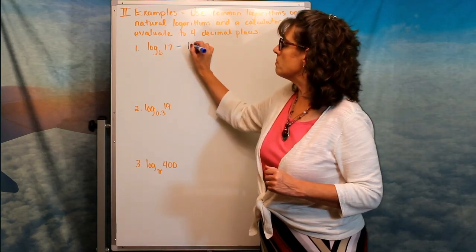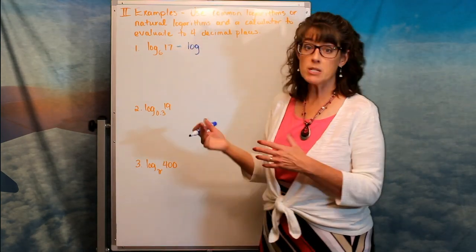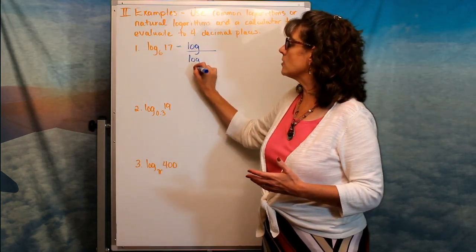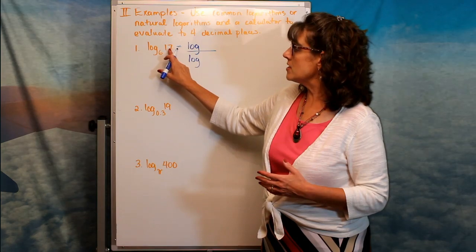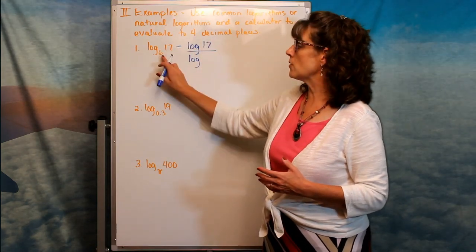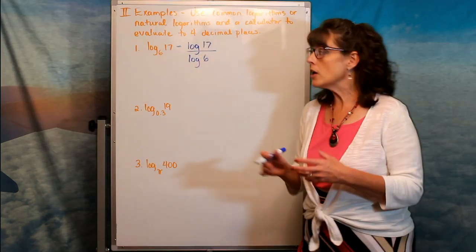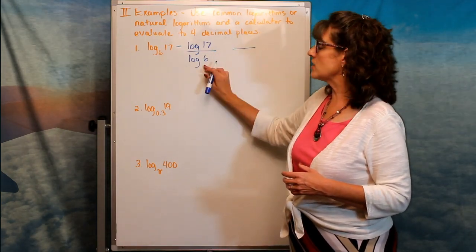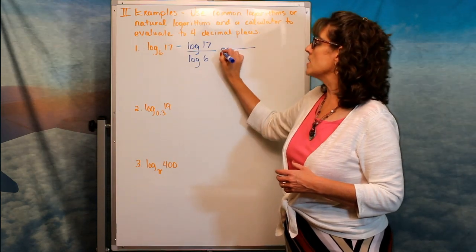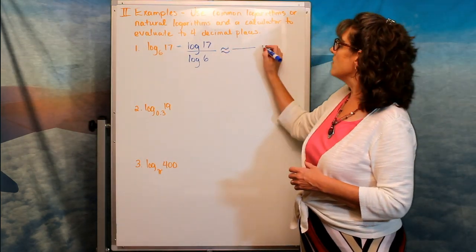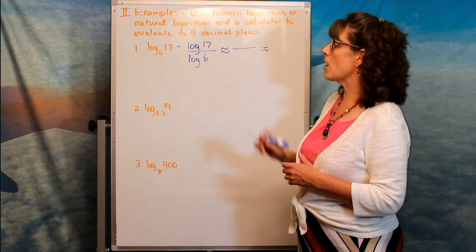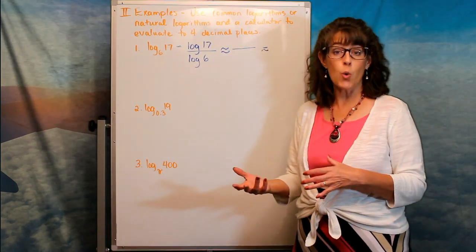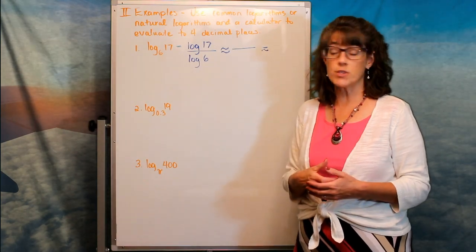Let's do base 10 first. When it's base 10, I don't have to show the base. What's going to happen is I do log on the numerator and log on the denominator — I take this number 17 and put it on the numerator, and this number 6 on the denominator. Then I get the decimal value for each, write them as approximations, and do that division to get my approximate answer. Let me show you how this works on the graphing calculator as well as the scientific calculator — I'll start with the scientific calculator first.